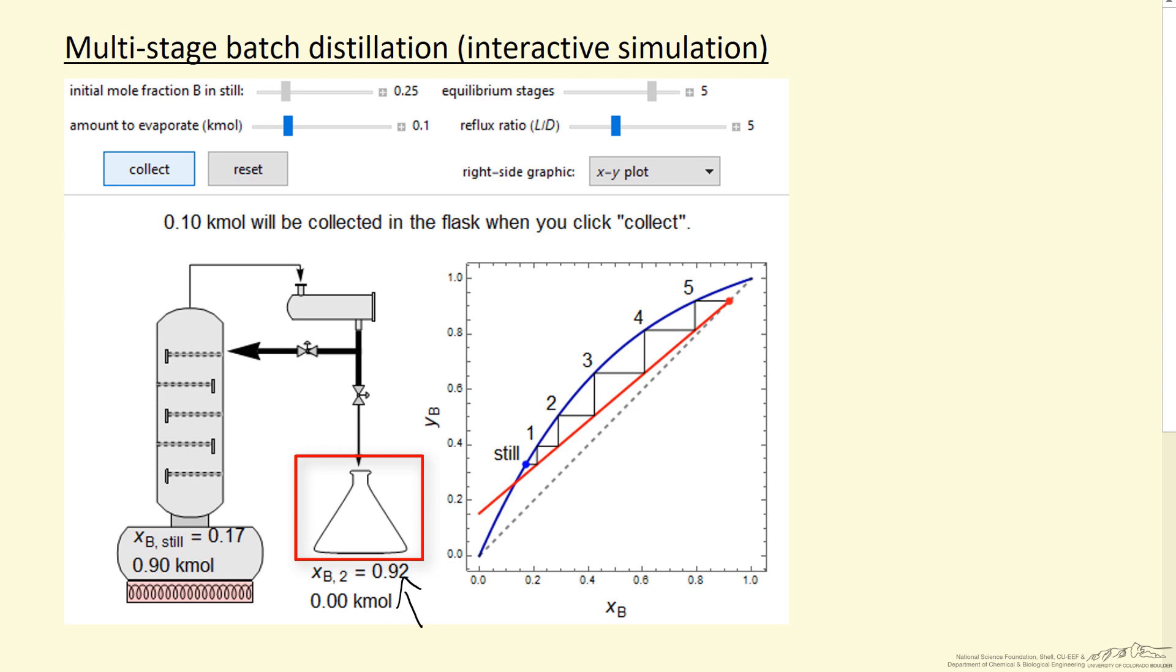As it says here, the amount to evaporate is one-tenth of a mole. I'm showing the simulation after we've already evaporated one-tenth of a mole. This is the second flask, and we started out with the initial mole fraction of 0.25 of component B, that's something we can change with the slider.